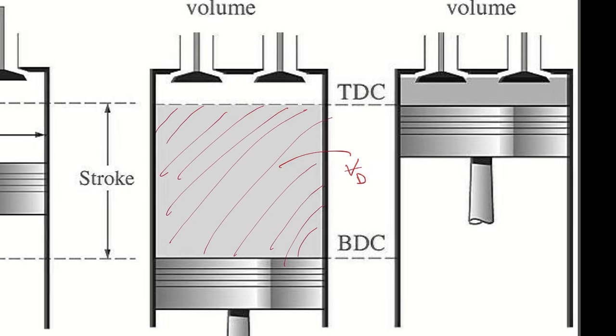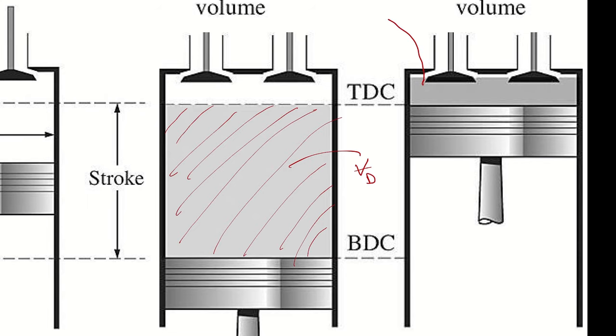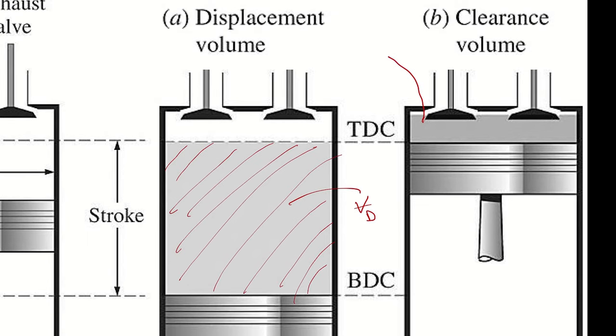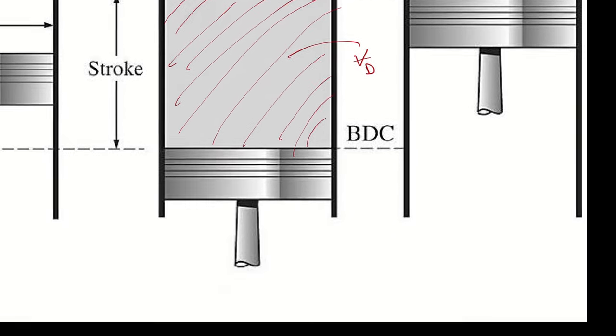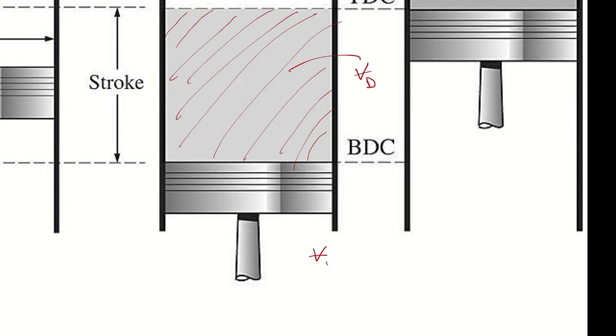The volume that is left over when the piston is at top dead center is called the clearance volume. These volumes are all related. We could say VBDC equals VD plus VC, and VTDC equals just VC.